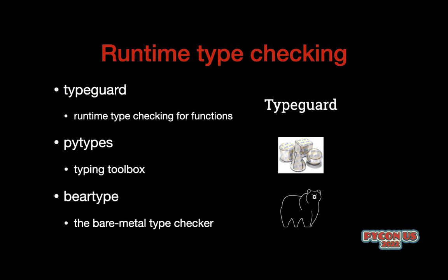Let's get into runtime type checking. There are a couple of libraries: TypeCard, PyTypes, and BearType. TypeCard is specifically advertised for doing runtime type checking for functions. PyTypes provides a generic type checking toolbox, and one of its tools happens to be runtime type checking. BearType also does runtime type checking.